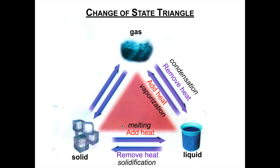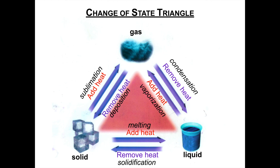Now for our last two changes of state. First, going from a solid to a gas — do you remember what that is called? That is called sublimation, and it skips the liquid stage, going straight from a solid to a gas. Is heat added or removed to create a gas from a solid? Heat is added because the particles move farther apart. And our last one, gas to a solid — that is called deposition. In deposition, are the particles getting closer together or farther apart when they become a solid? They are getting closer together, so we remove heat.